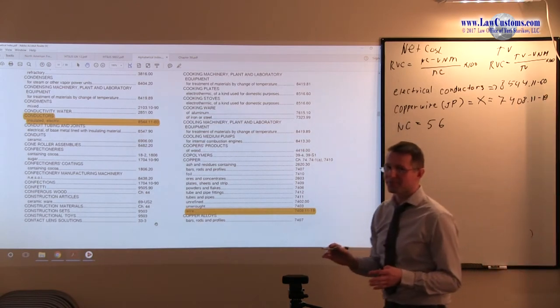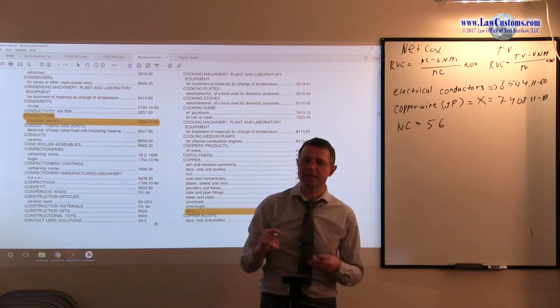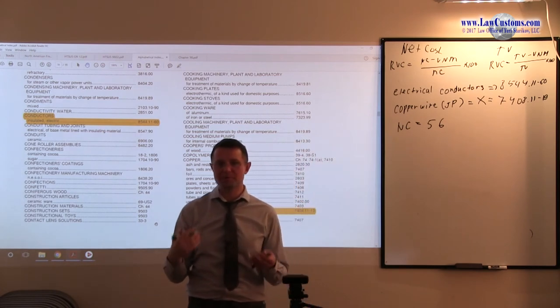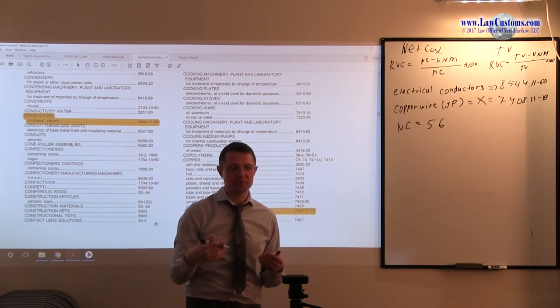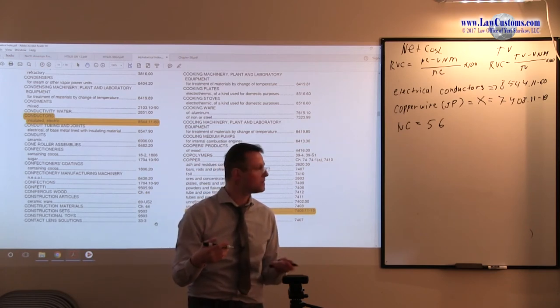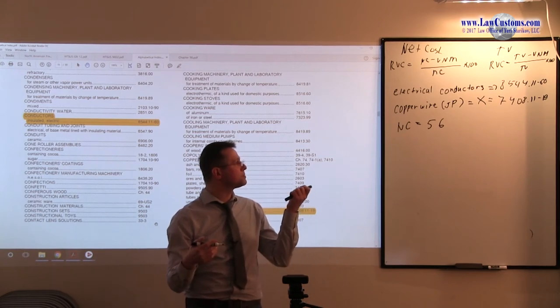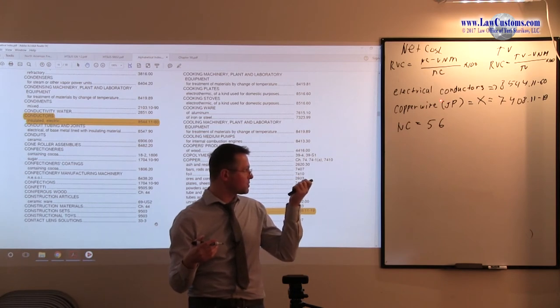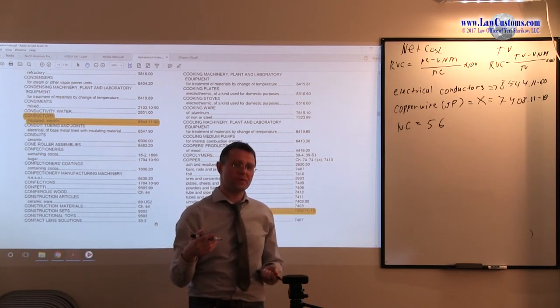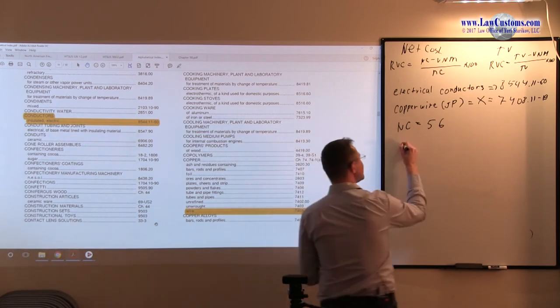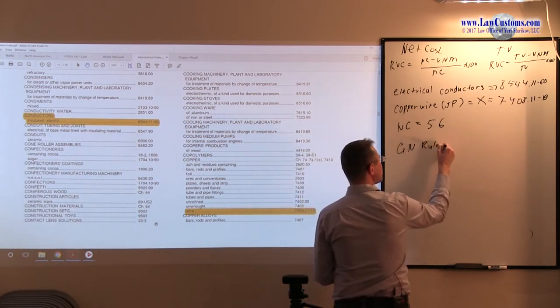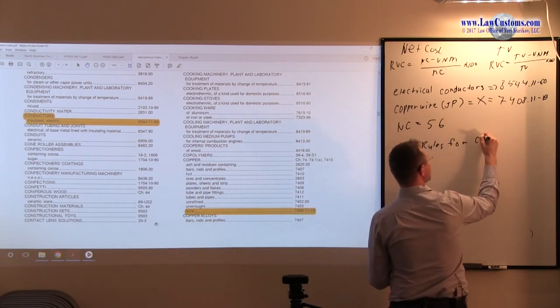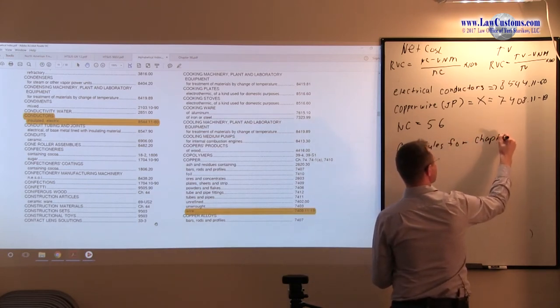What's the next step? The next step is the focus of where the substantial transformation takes place, because the non-originating materials must be transformed in a NAFTA country. The substantial transformation takes place in Mexico and it takes place in the form of electrical conductors. So our focus would be general note rules for chapter 85.